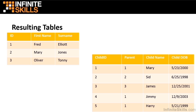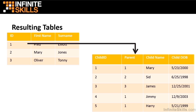So we have Mary, Sid, James, Jimmy, and Harry, each with their date of birth, and more importantly each with a parent reference so we know who that child belongs to. We have a link between the ID in the parent table — referred to as the primary key because it's unique to each parent — linking through to the parent column in the children's table, which is referred to as the foreign key.